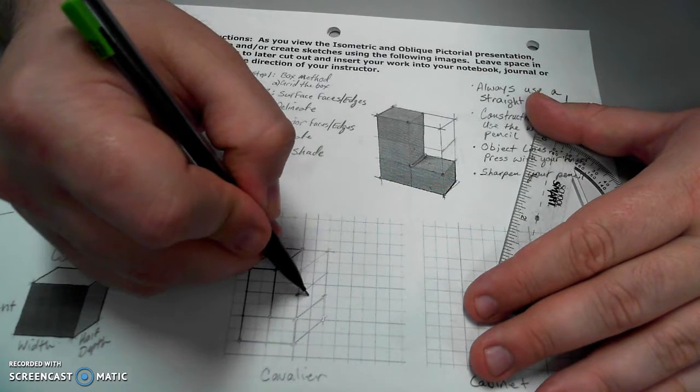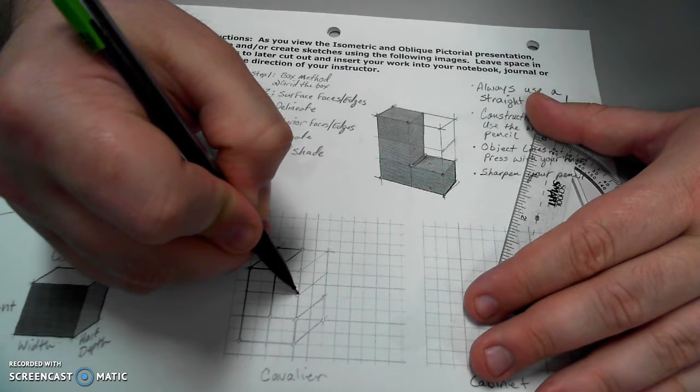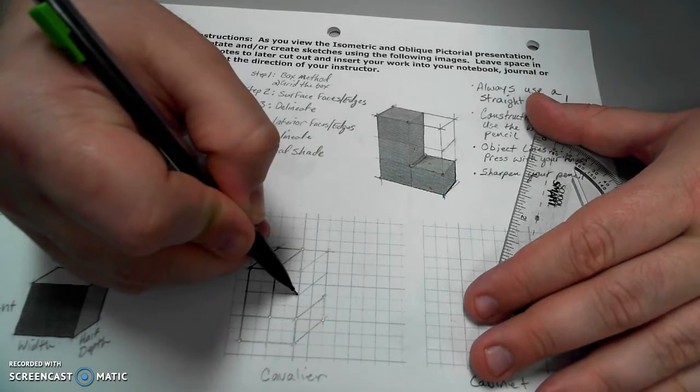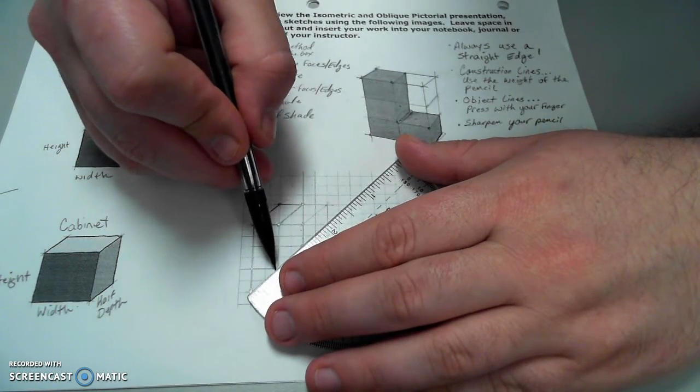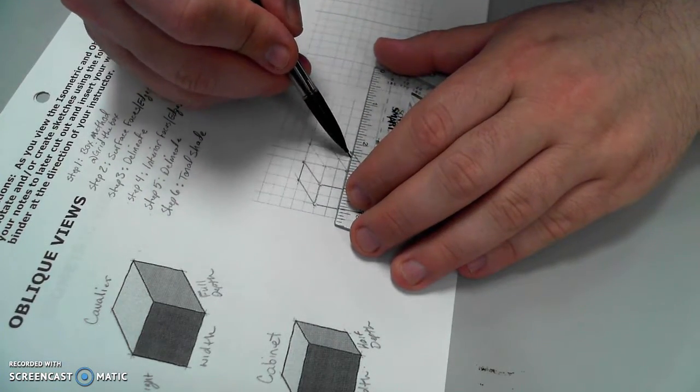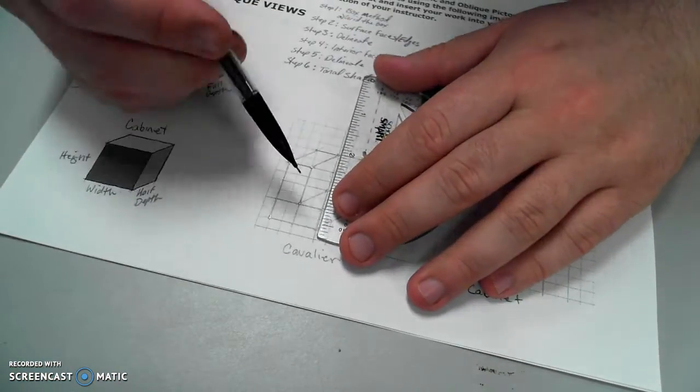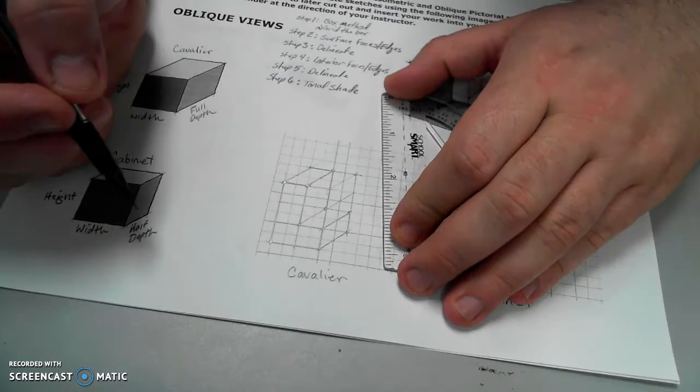It just so happens to coincide with that edge. I can move from this point over, and I can move from this point down. I'll draw in some construction lines to identify them. And once I'm happy with hitting my marks, I'll delineate those lines.